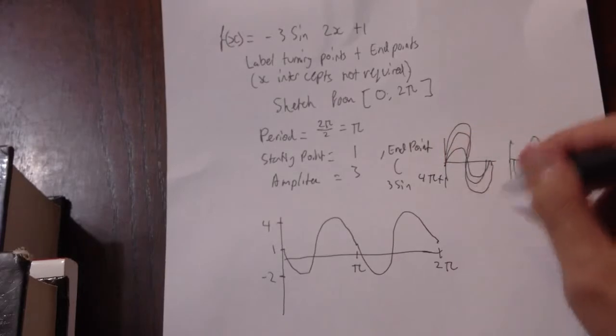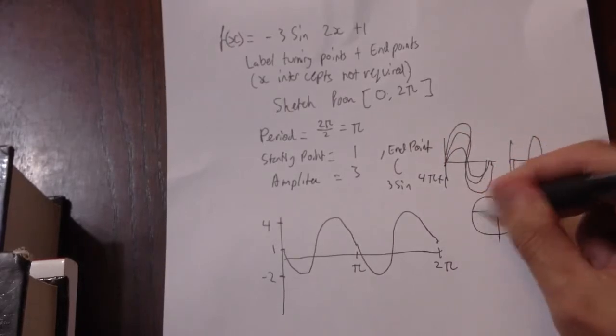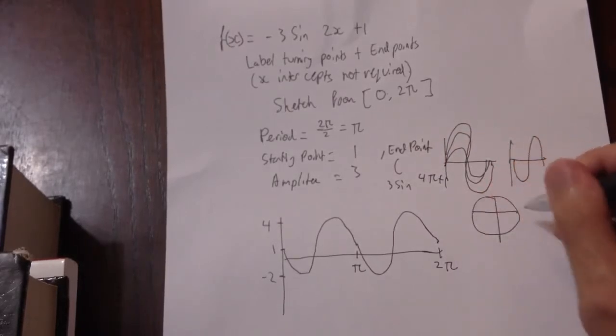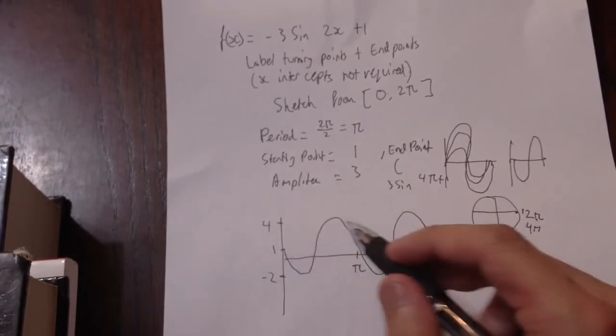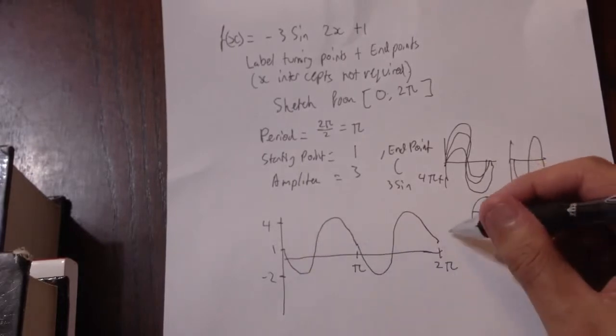So we get 3 sine 2π, as x makes 4π. 4π plus 1. Looking at my circle, sine of 4π is... round once gives me 2π, round twice gives me 4π, and the height is 0. Or we could say it's just two periods, so it's going to end where it starts.